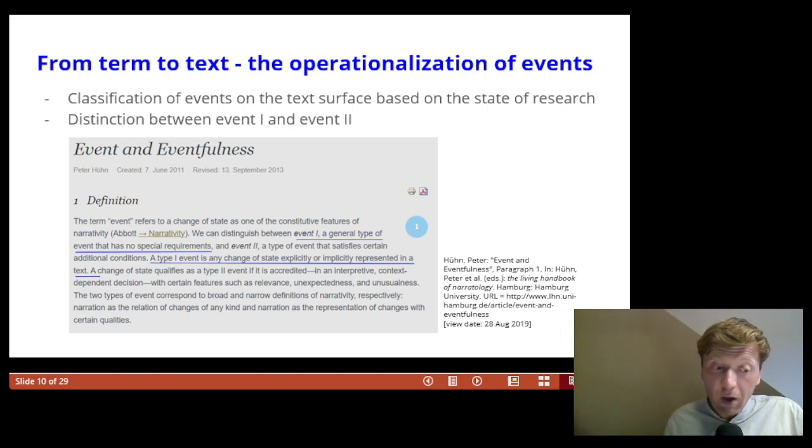The distinction between event one and event two was introduced by Peter Huen, whereby all events, first of all, represent changes of state. According to Huen, event one is, and I quote, a general type of event that has no special requirements. A type one event is any change of state explicitly or implicitly represented in a text.